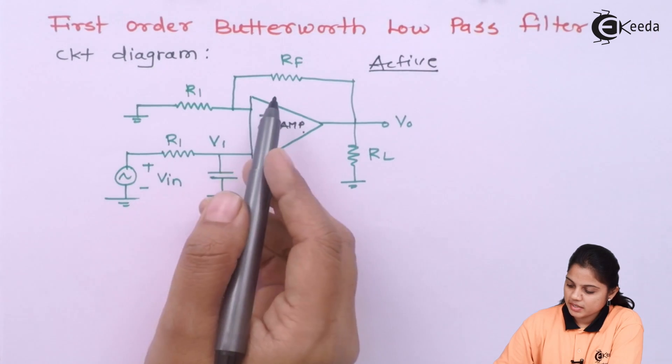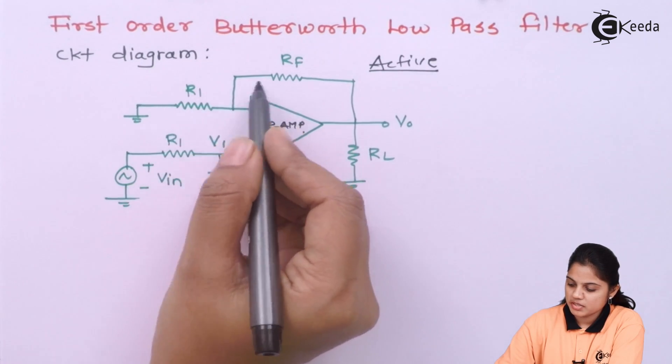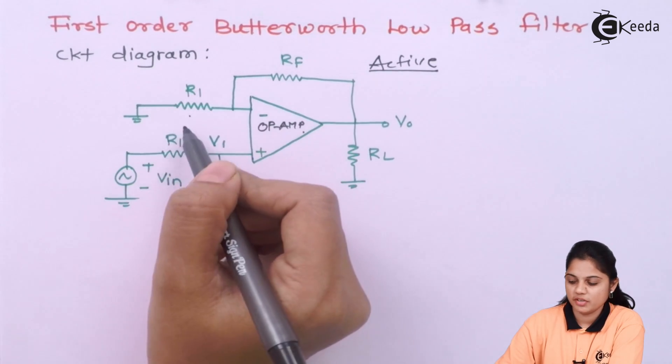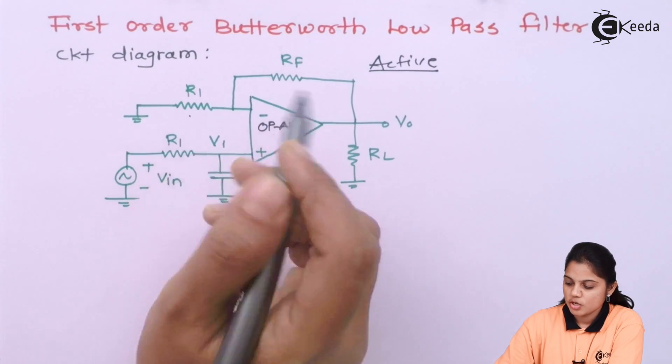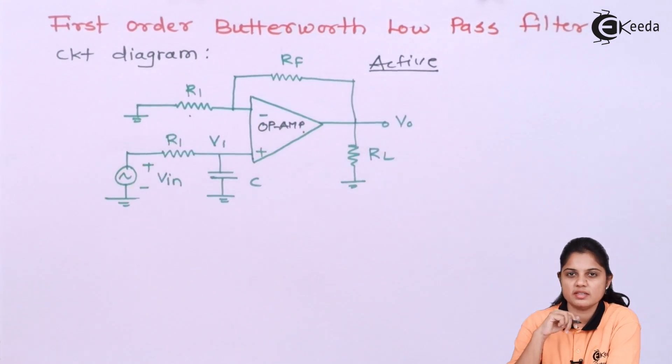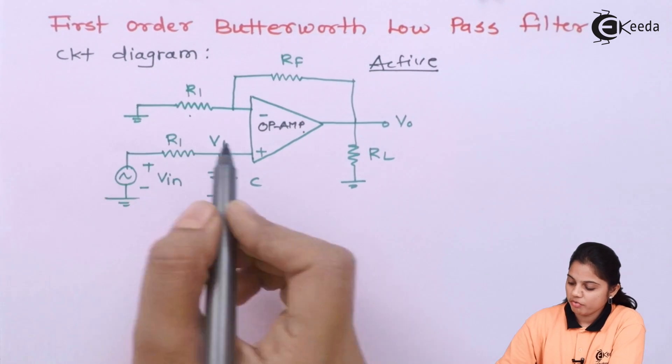So why are different components connected? First of all, these two components connected over here are familiar. We are familiar with these two components that is a feedback resistance and input resistance. So basically, these two resistances will decide the gain of an amplifier.